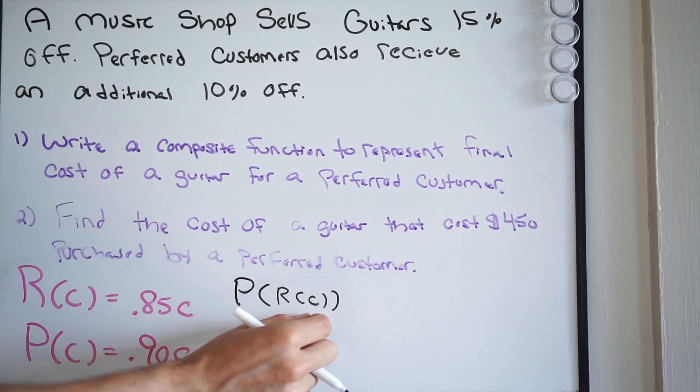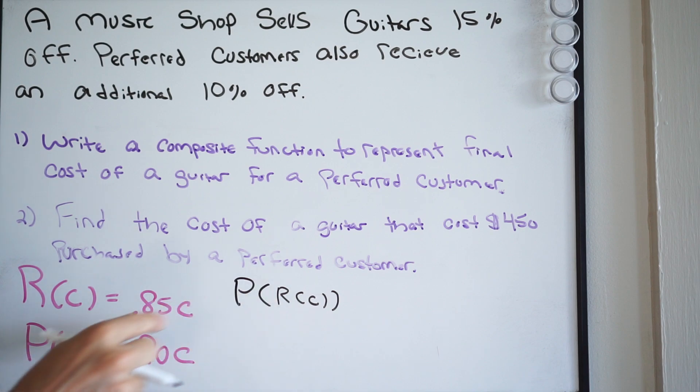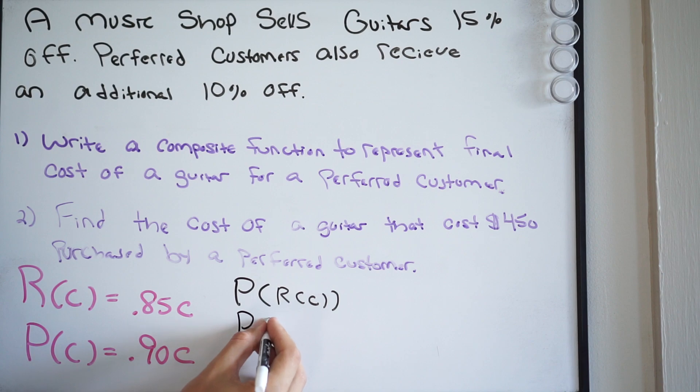Again, we work our way from the inside out when dealing with composite functions. So start inside the parentheses, R of C. We're simply just going to plug it in, 0.85C. So we'll have P and then we'll have 0.85C.